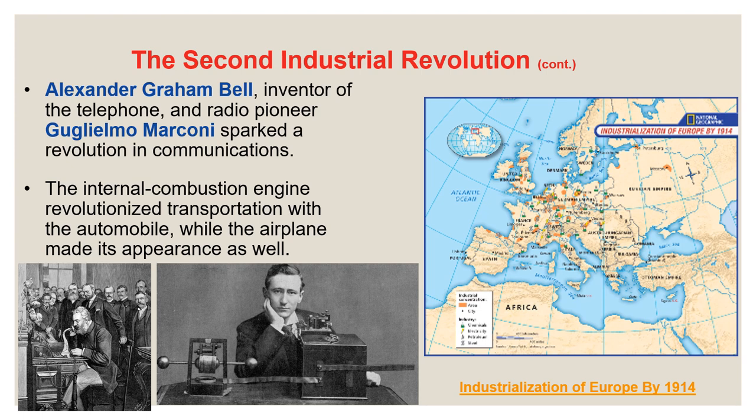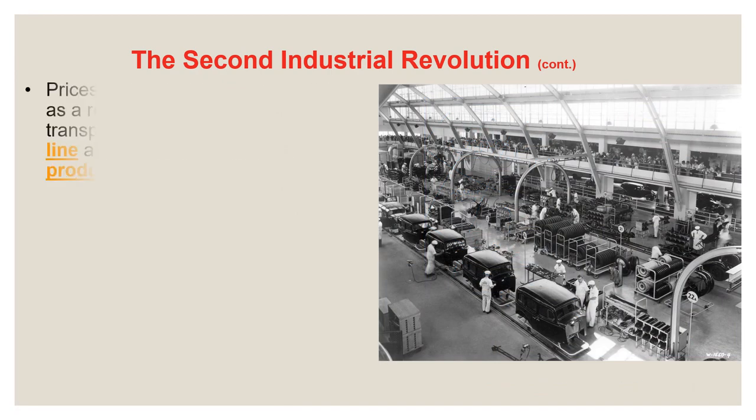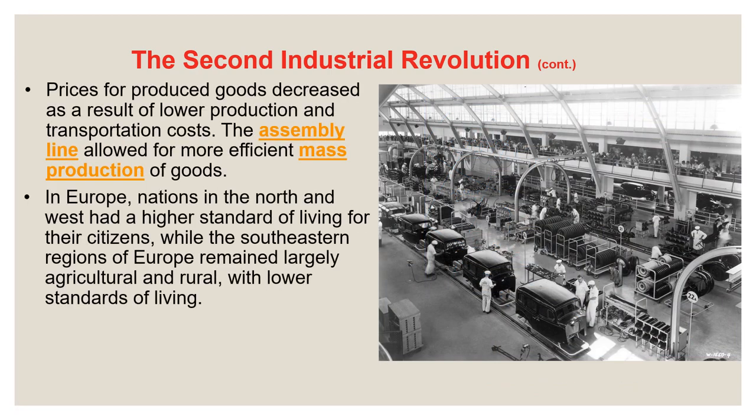The internal combustion engine is probably the most important invention of the Second Industrial Revolution. It revolutionized transportation with the automobile, while the airplane eventually also appeared using the same engine. With the Second Industrial Revolution, prices for produced goods decreased as a result of lower production and transportation costs — efficiency led to lower prices and more consumerism. The creation of the assembly line allowed for more efficient mass production of goods, pioneered by Henry Ford in the United States, and eventually spreading to Europe as well.